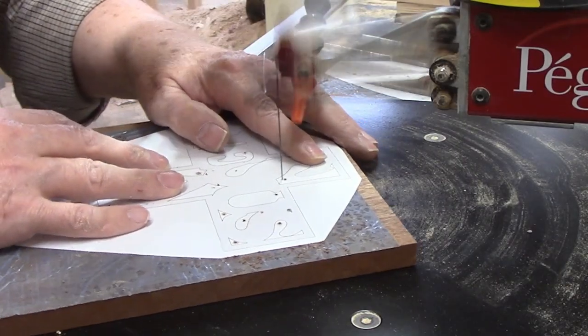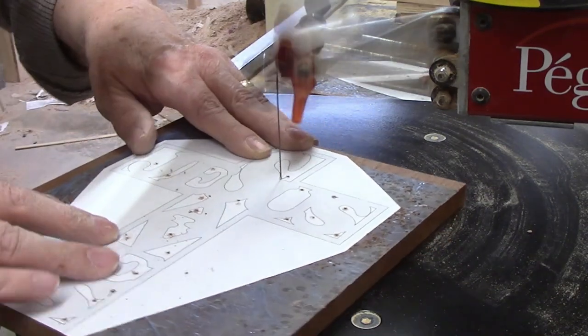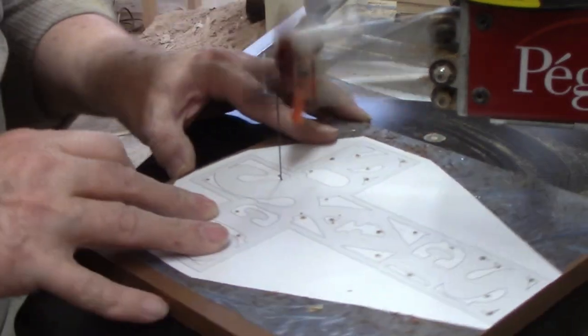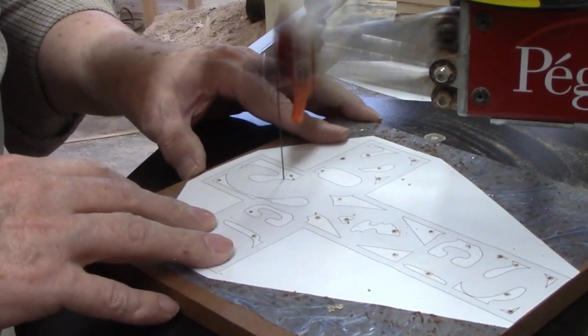I had a number five Pegas modified geometry blade in the scroll saw for my last project which is the perfect choice for this project. I'll be making this cross from half-inch thick Sapele.